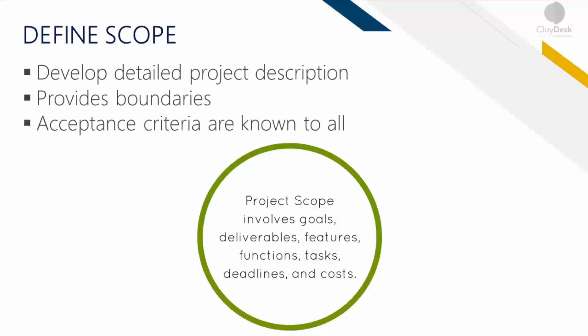Defining the scope is the process of developing a detailed description of the project or product. The benefit is that this process describes the product, service, or result boundaries and acceptance criteria. I've covered the inputs, tools, and outputs — this is self-explanatory and you can read through it. The key points are what I'm highlighting; the rest you can read through as homework, since you'll need to work through the theoretical parts on your own.